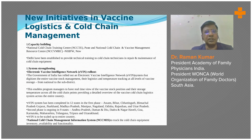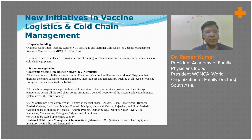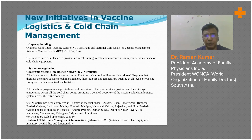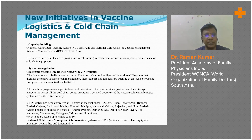These are a few of the newer initiatives related to vaccine logistics and management. As part of capacity building, a national cold chain training center has been established in Pune, and a vaccine management resource center has been established at the National Institute of Health and Family Welfare in Delhi. This has been established to provide technical training to cold chain technicians in repair and maintenance of cold chain equipment. The electronic vaccine intelligence network has been established, and a national cold chain management information system has been set up to track cold chain equipment, inventory, availability, and functionality.